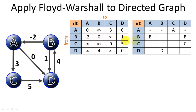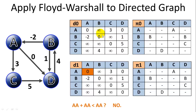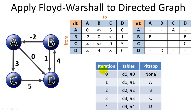For example, B to A has a distance of negative two, and the predecessor vertex is B. We populate the direct-path values into the table at iteration zero (D0 and pi0). With iteration one, we ask: can we find a shorter path by stopping at vertex A? With iteration two: can we stop at vertex B? And so on. We look at every single square in the table with each iteration — that's how we get n cubed. There are n squared boxes and we go through the table n times.